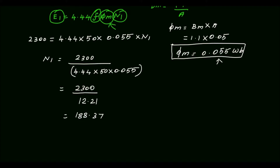The number of turns cannot be a fractional value, so we round 188.37 to the nearest whole number, giving N1 = 188. The number of turns in the primary side is 188.